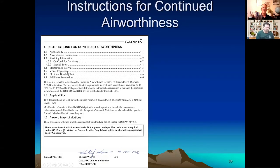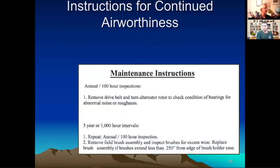On the other end of the spectrum, the Garmin 345 transponder ICA is about seven pages long. It has sections on limitations, servicing information, maintenance intervals, and visual inspection. So you're up to seven pages for a transponder — and if you're not doing this, technically your transponder is not airworthy. Compare that to the Plane Power alternator ICA: every year or 100 hours, remove the belt, turn the alternator, make sure the bearings are okay; every five years or 1,000 hours, remove the field brush assembly and inspect the brushes for excess wear. Simple and straightforward.